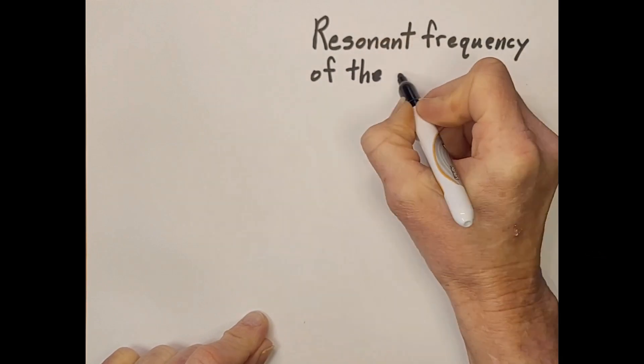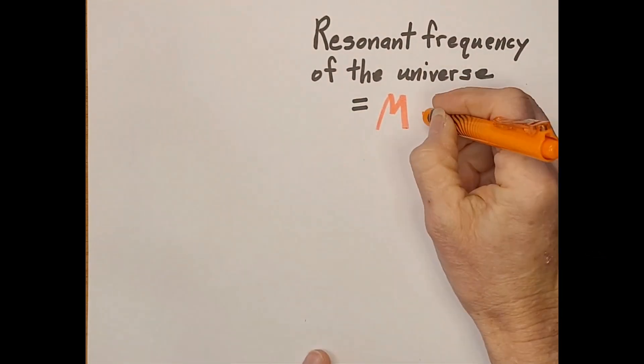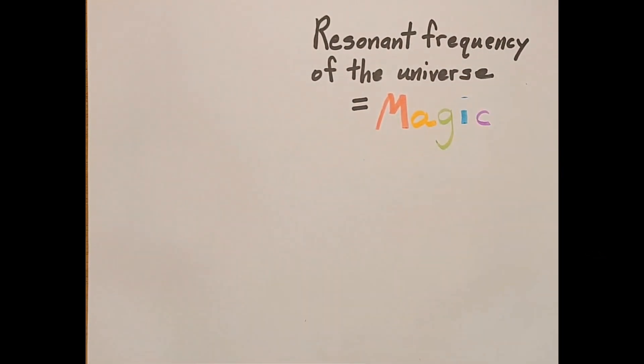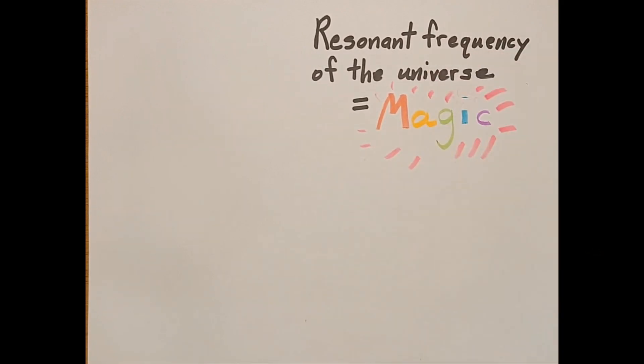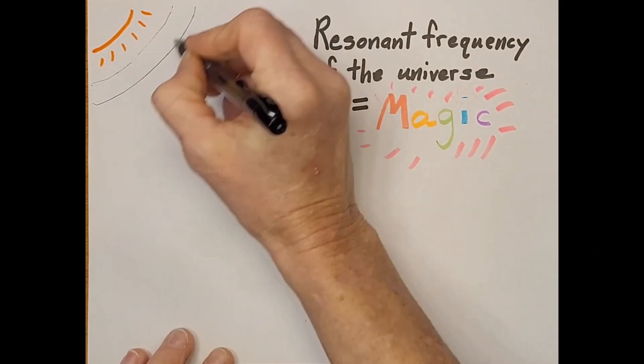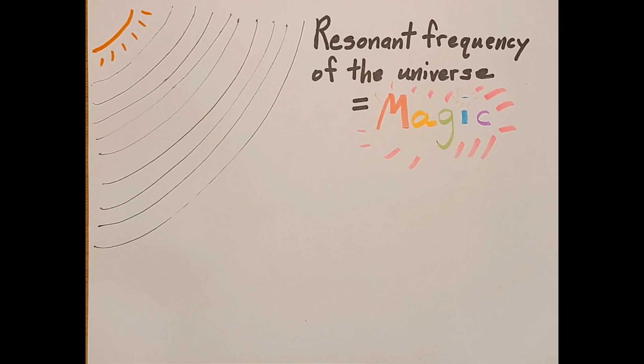There have been several fads about the resonant frequency of the universe being magical and the frequency in question has changed with each fad. For a while it was A466.2, then A481.8, but the latest is A432 based on the Schumann resonance. So I'll focus on that one in this video.